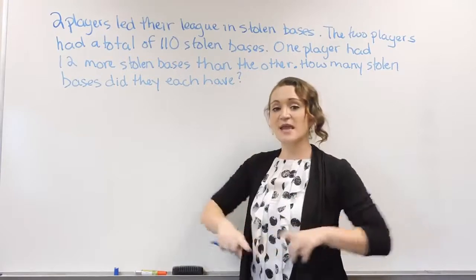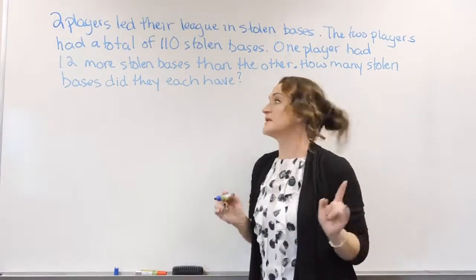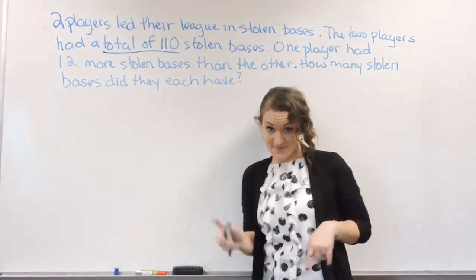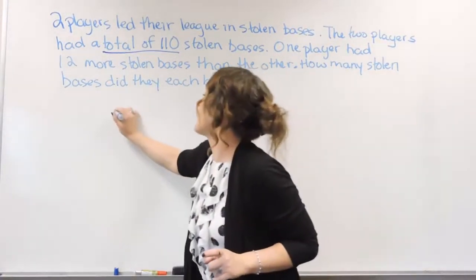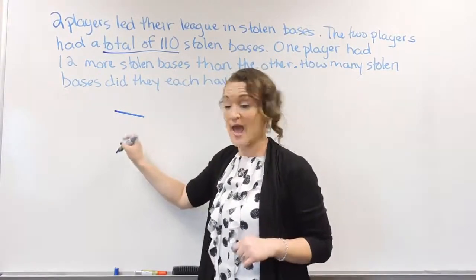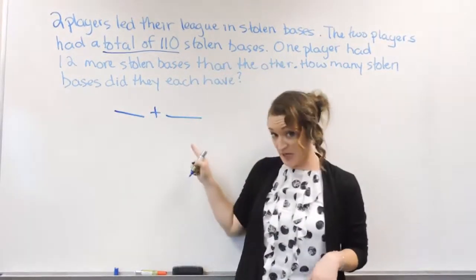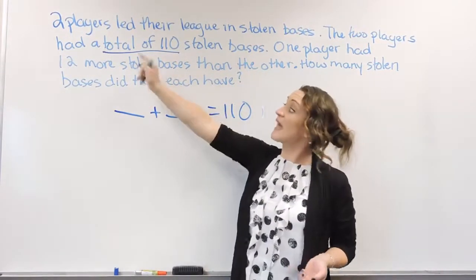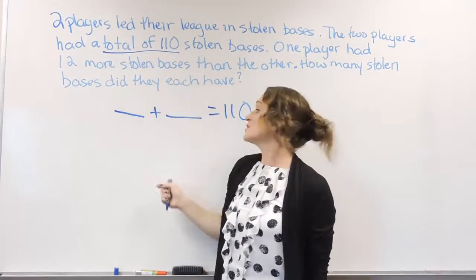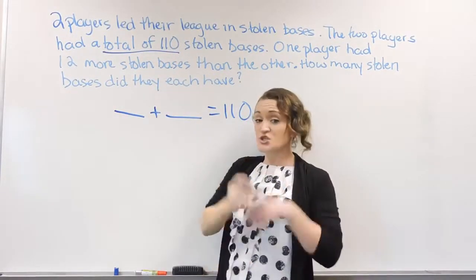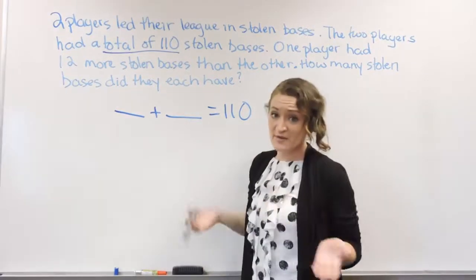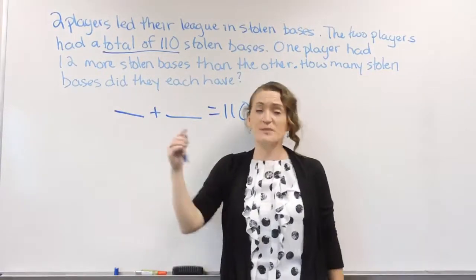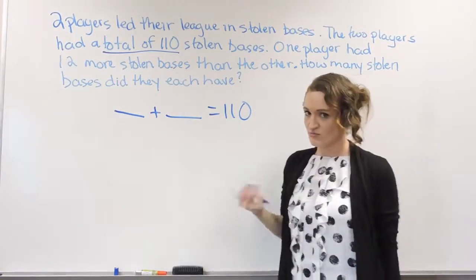We have two players who lead their league in stolen bases. It says that they have a total of 110 bases together. So however many bases player one has plus however many bases player two has is going to equal 110 — they told us that, a total of 110. So they're going to add to 110. The only other bit of information given is that one player had 12 more stolen bases than the other.